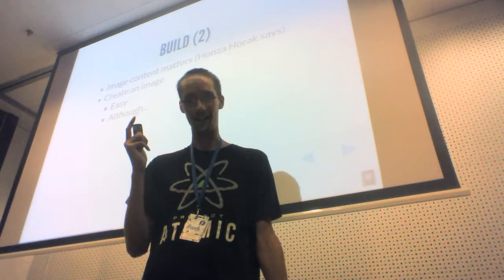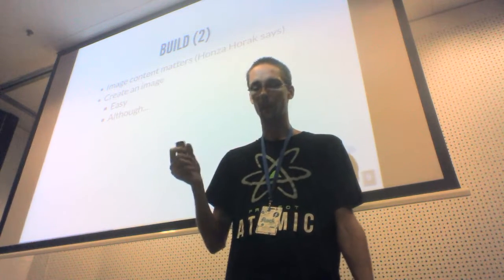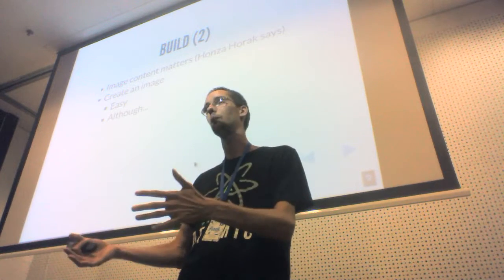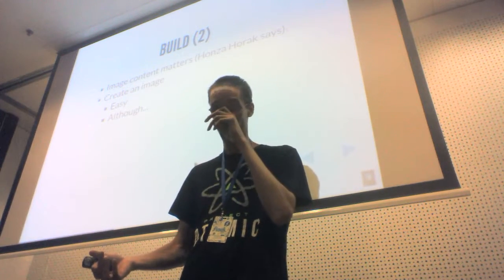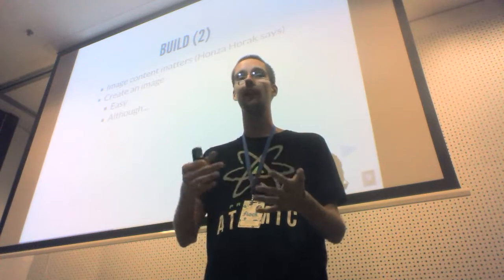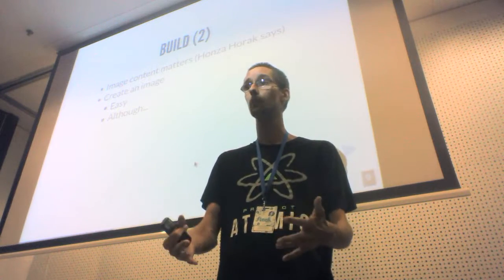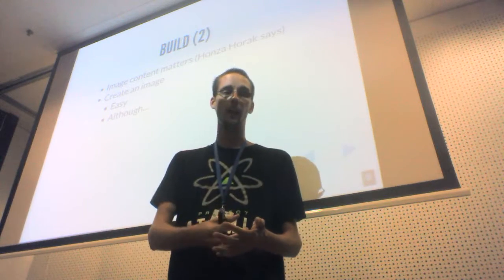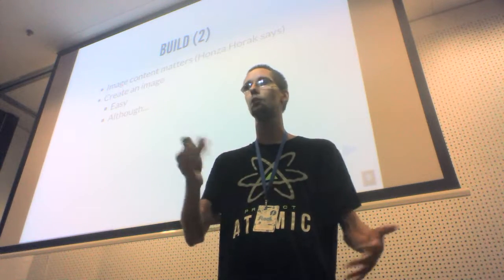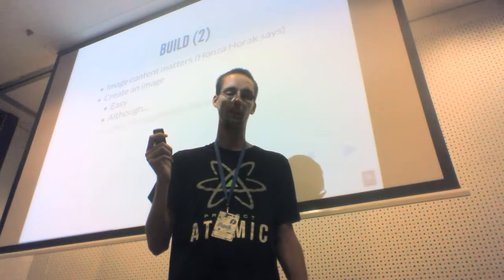Now we have the base image and the recipe for creating the Docker image, so we can build it. This might not be easy, because the build is done with the Docker build sub-command, and it has some issues. Some of these issues were not addressed for one or two years, and the community still complains about them. Docker sometimes tries to do something about it, and sometimes they just ignore it. Let's take a look at some of these issues.